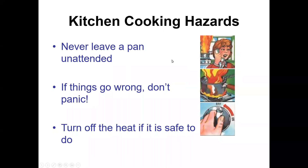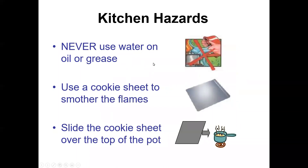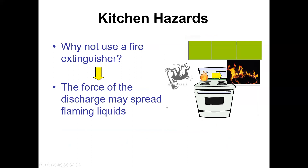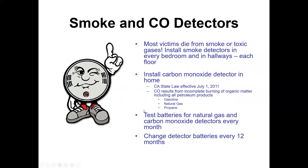Cooking hazards: don't leave a pan unattended. If things go wrong, don't panic — turn off the heat if it's safe to do so. Never use water on an oil or grease fire; the steam expansion will blow the fire all over your kitchen. Use a cookie sheet to smother the flames — you can slide it over the pot without reaching into the fire. Don't use a fire extinguisher either, because the force of the discharge can blow flames onto your cabinets and cause a kitchen fire.